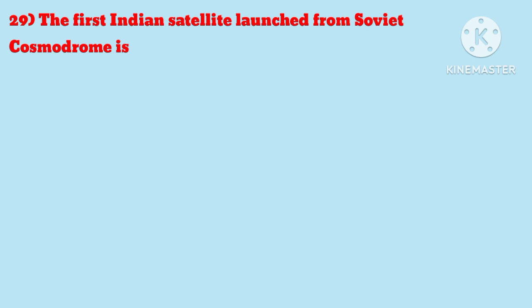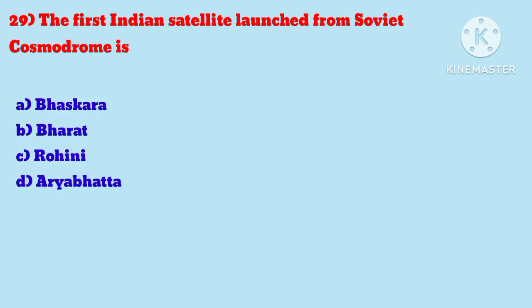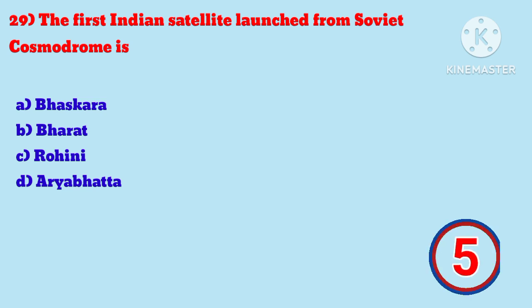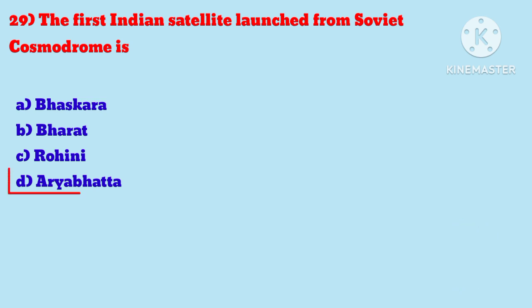Question 29: The first Indian satellite launched from Soviet Cosmodrome is — Answer is Aryabhatta.